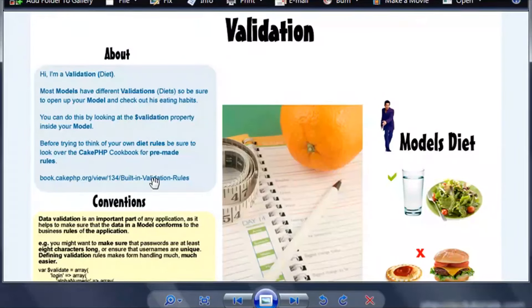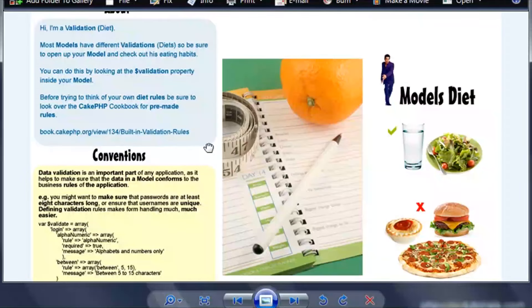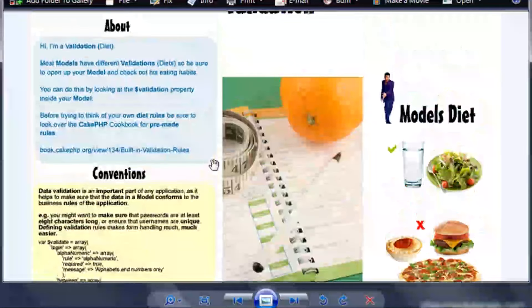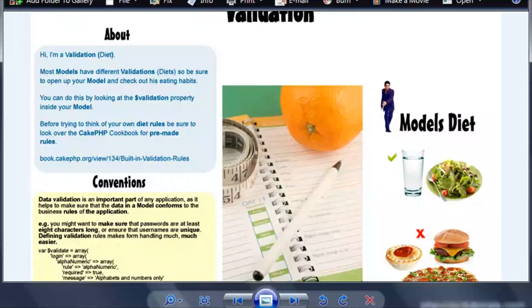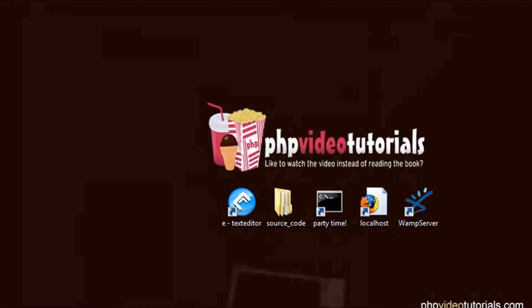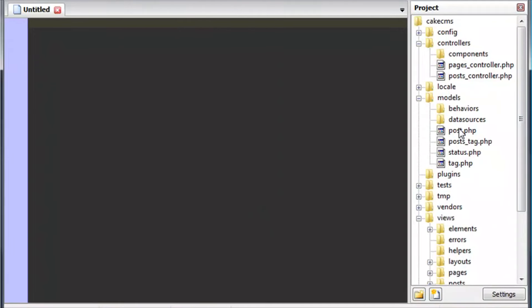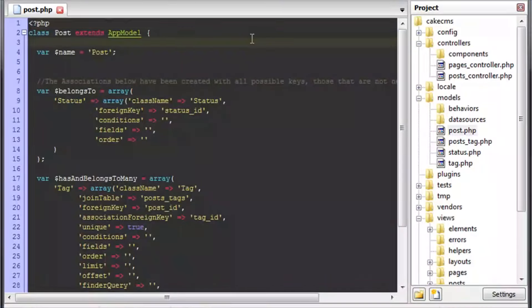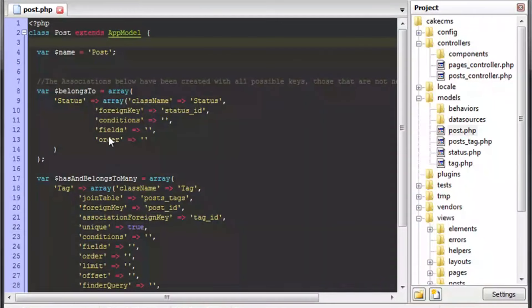So you can look in there. And you can see that cake has basically got you covered for pretty much anything you want to validate against. But if you need to create a custom validation you can. So let's check out our model's eating habits right now. We'll just go in and have a look see. Let's open up your editor there and jump into models directory. And we just want to open up our post model and have a look see.